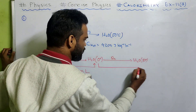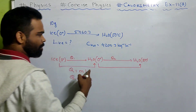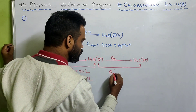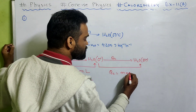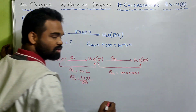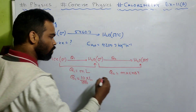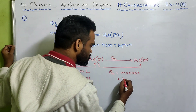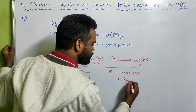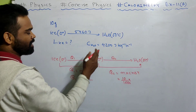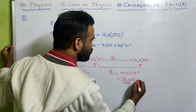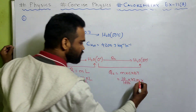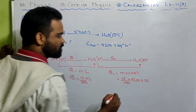For the second step, water at 0 degree centigrade absorbs heat and changes to water at 50 degree centigrade — there is a rise in temperature, so Q2 equals M times C times delta T. Mass is 10 by 1000 kg, C of water is 4200, and change in temperature is 50 minus 0, which is 50.